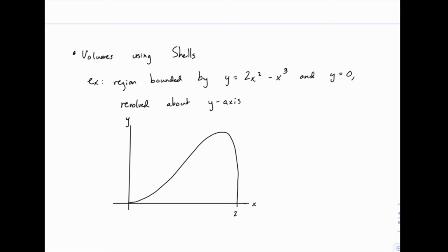So we're told to take the region bounded by y equals 2x squared minus x cubed and y equals zero, which I've drawn for you here because that's not one that you would probably be able to draw from memory. If you draw that function it looks like this curve here, and then y equals zero of course is the x-axis, and we're revolving this around the y-axis.